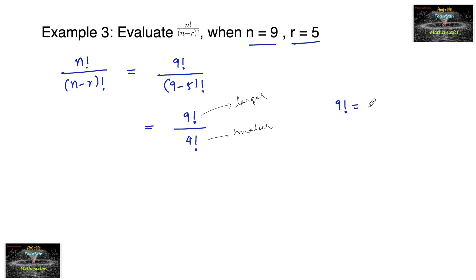It can be reduced. 9 into 8 into 7 into 6 as per our requirement up to 4 factorial. We can write up to here: 9 into 8 into 7 into 6 into 5 into 4 factorial upon 4 factorial.